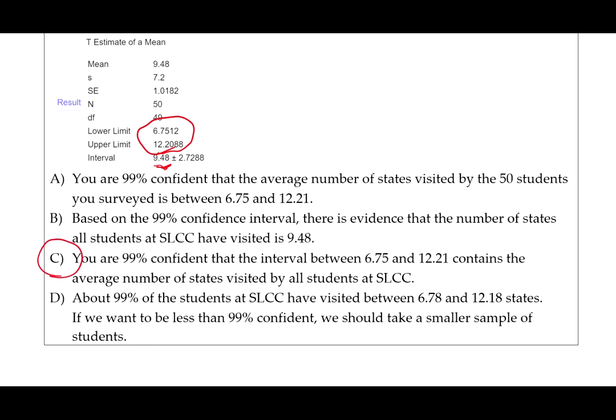Let's look at answer D just to talk about why that one's incorrect. About 99% of the students at SLCC have visited between 6.78 and 12.18 states. The problem here is in the first sentence. This confidence interval does not tell us the values for 99% of the individuals. It tells us the values that we believe are likely values for the population parameter at that confidence level, not that percent of individuals. Now, if we did want to be less than 99% confident, we could take a smaller sample of students. But in general, we want to have a higher confidence level, so we wouldn't normally talk about how we could have a lower confidence level such that there's a bigger risk that our interval would not capture the parameter.